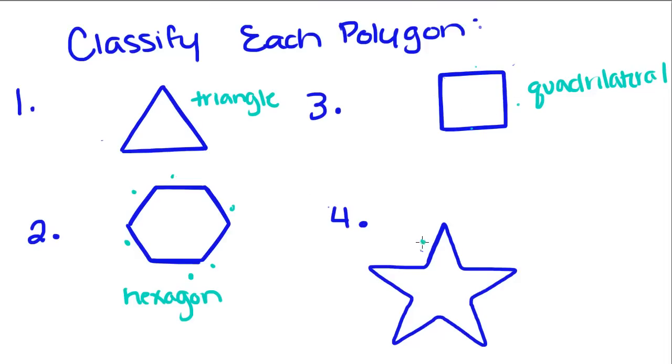This has one, two, three, four, five, six, seven, eight, nine, ten. So this is a decagon because it has ten sides.